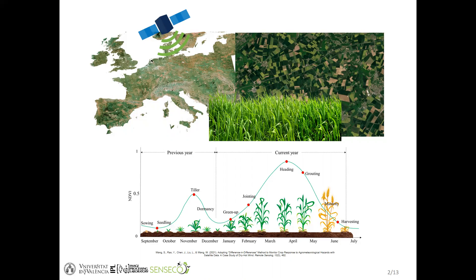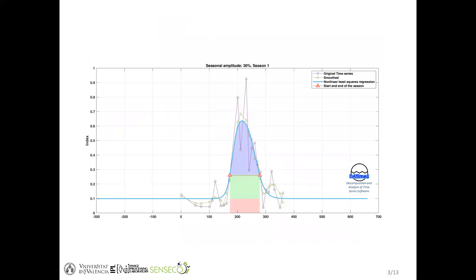Remote sensing is also useful for studying the vegetation response to environmental changes. Particularly for crop monitoring, proper spatial and temporal resolutions are required to characterize crops at their different phenological stages. Here's a simple demonstration case of a temporal profile of a vegetation index describing a typical crop growing cycle corresponding to a single season.